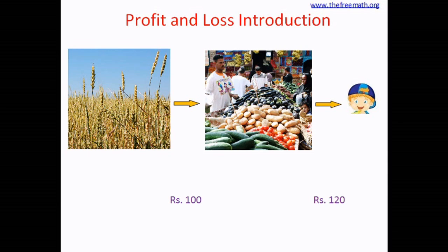The cost at which he buys the vegetables is called the cost price, or CP for short. The cost at which he sells the vegetables to us or any customer is called the selling price, or SP. So cost price (CP) is the price at which anybody buys something, and selling price (SP) is the price at which anybody sells something.